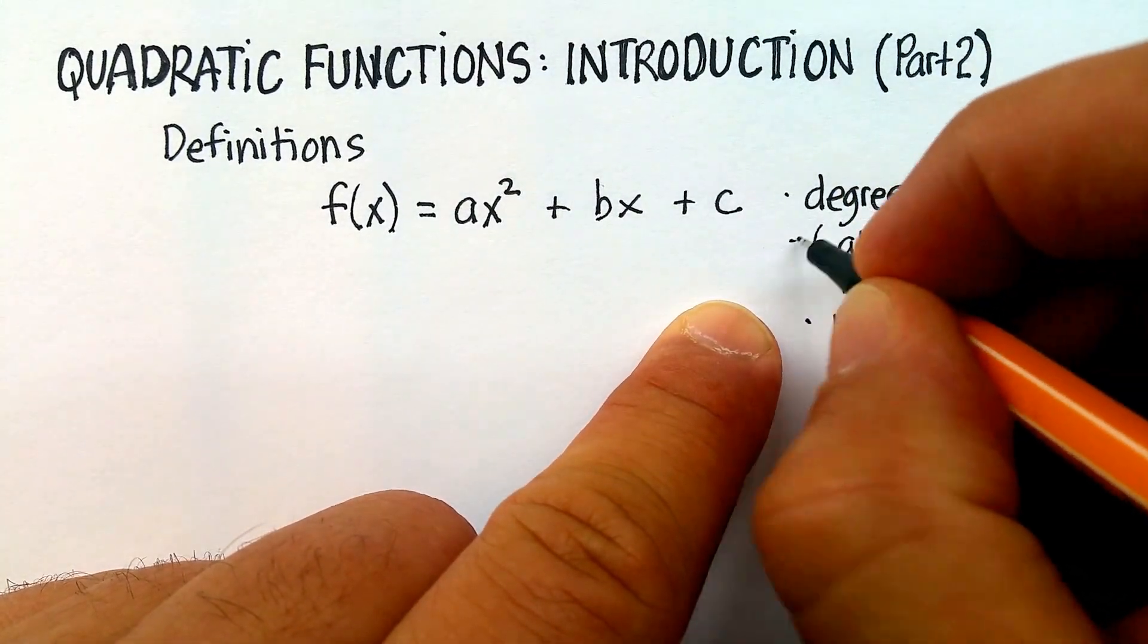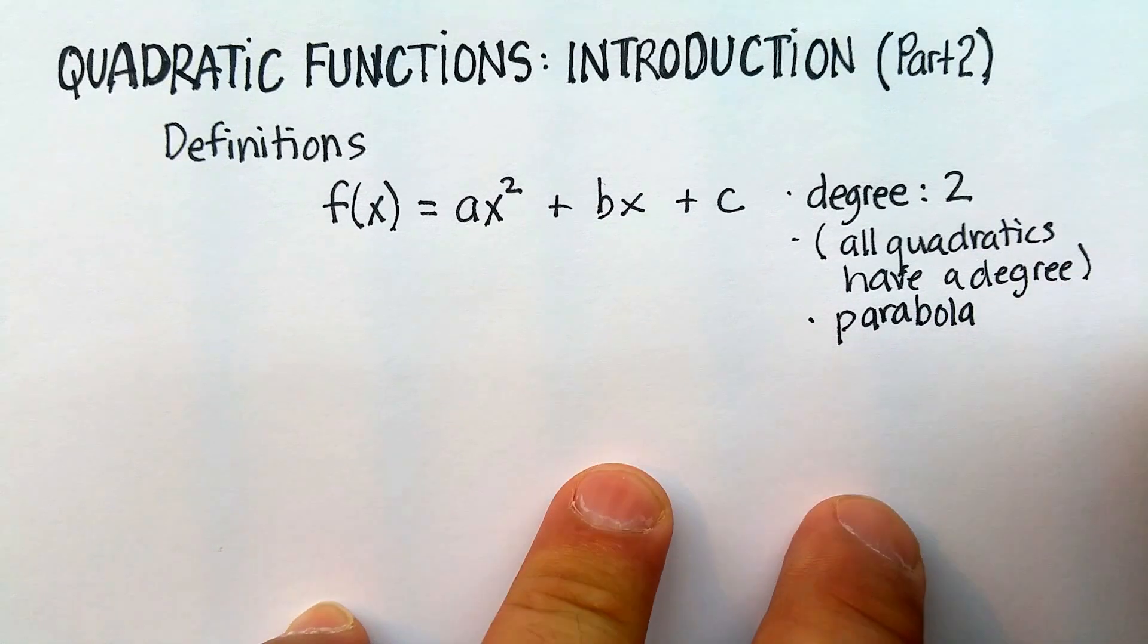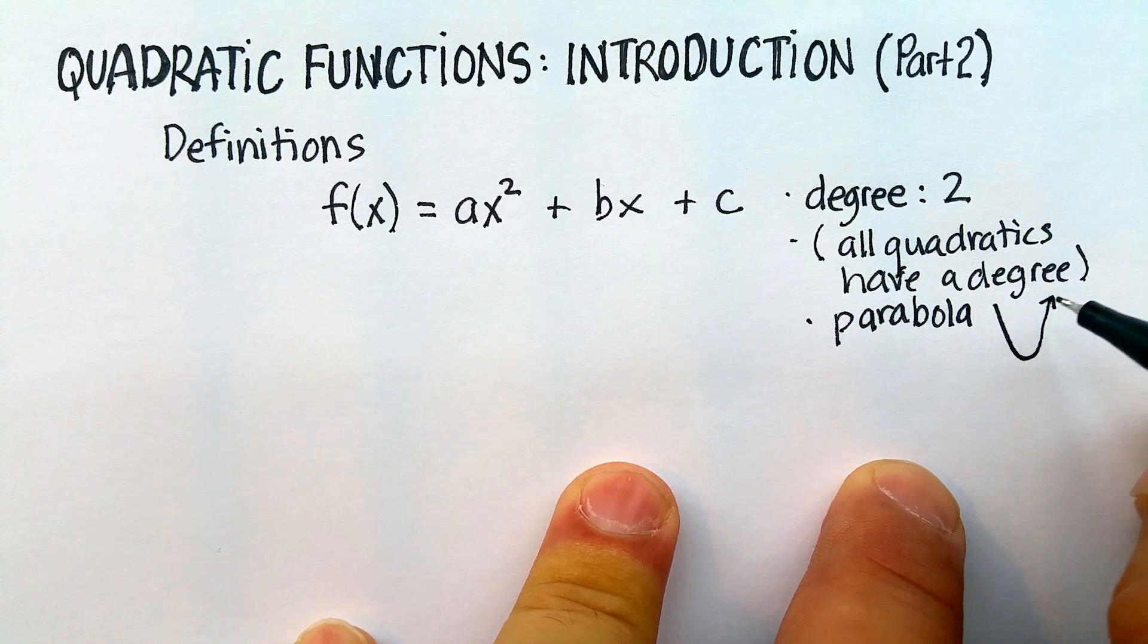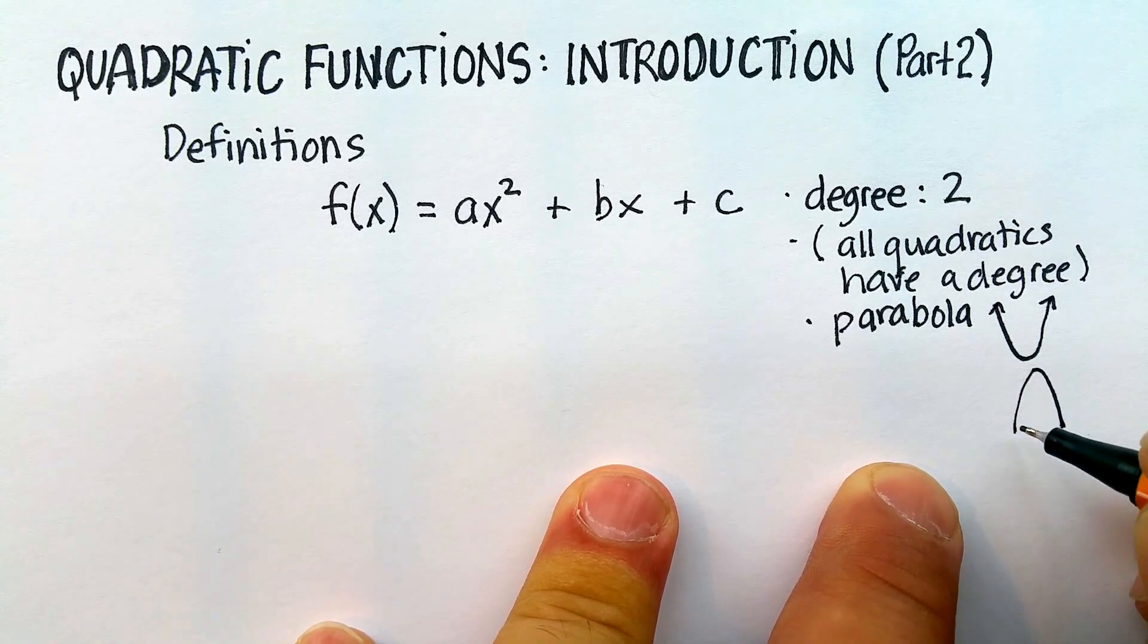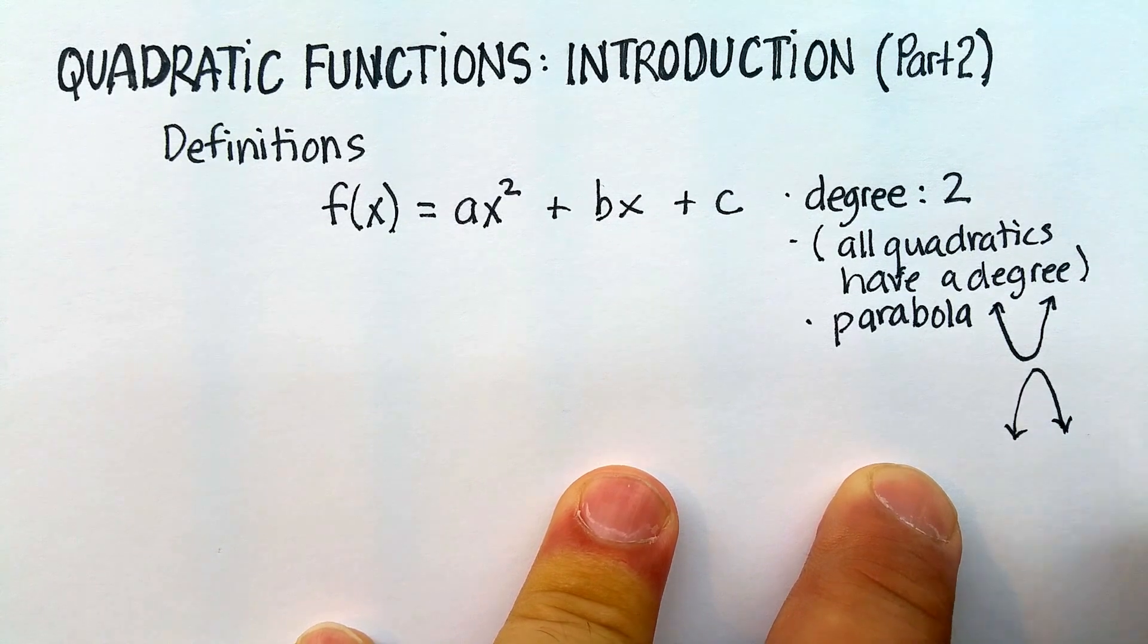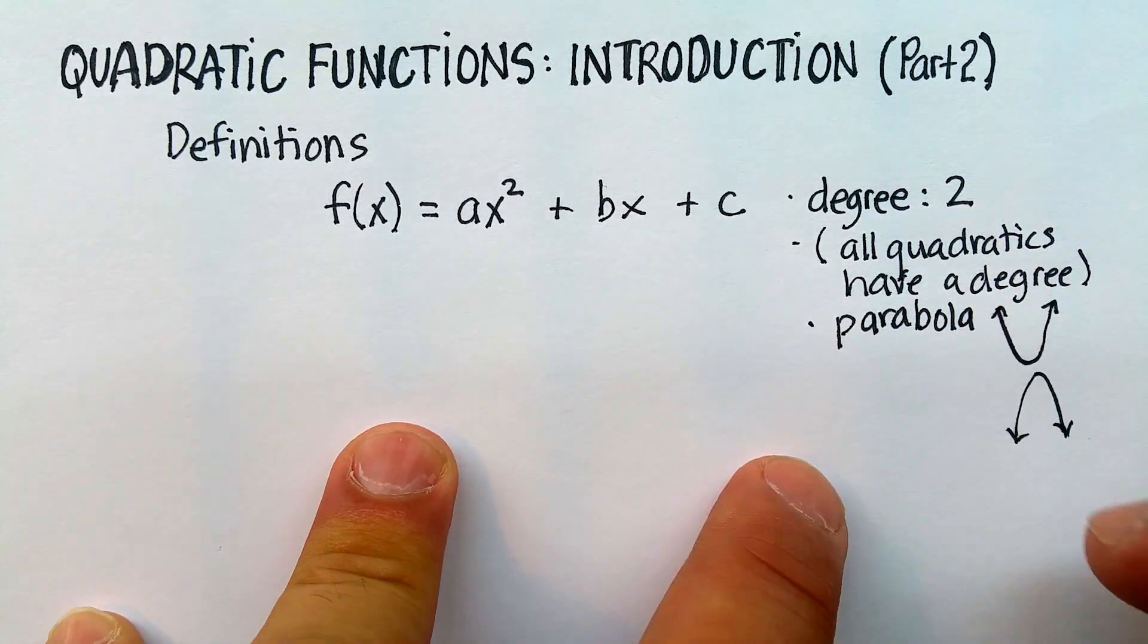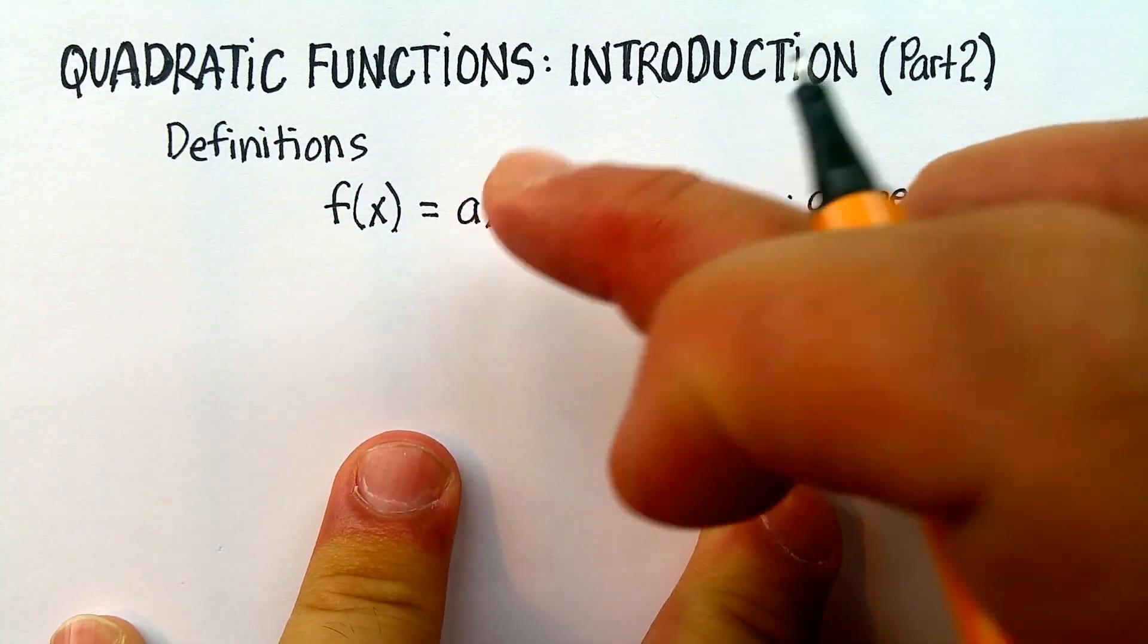And we talked a little bit about that before. What is a parabola? A parabola basically is something that follows that shape, right? Or it can also be upside down. It can actually also be sideways, but we're not going to talk about those in this particular course. So, this is what a parabola is. This is what a quadratic is, and this is how you define it, is by the degree of two.